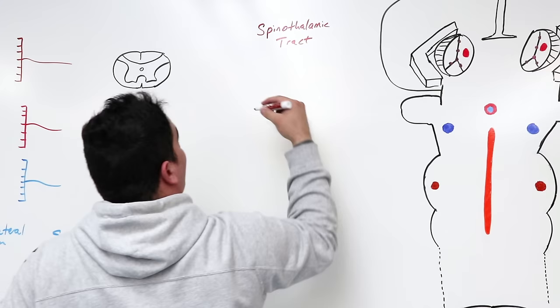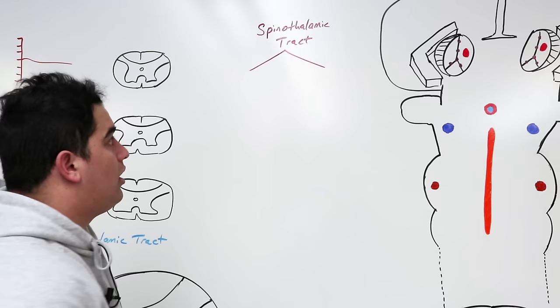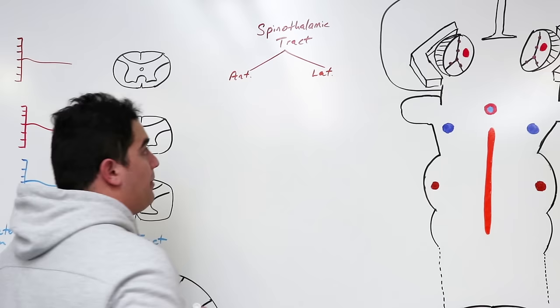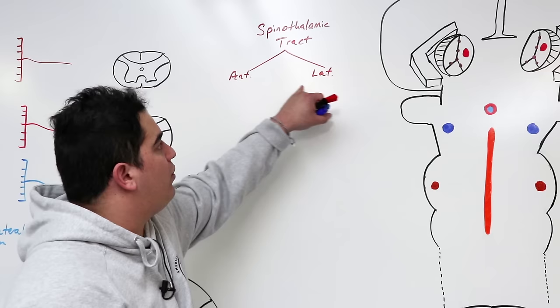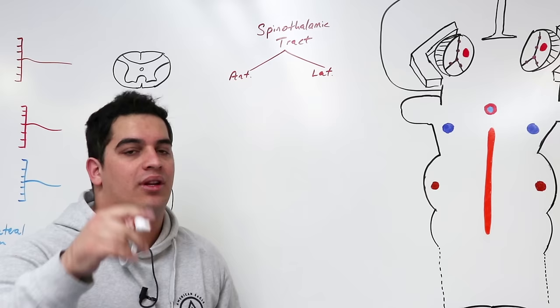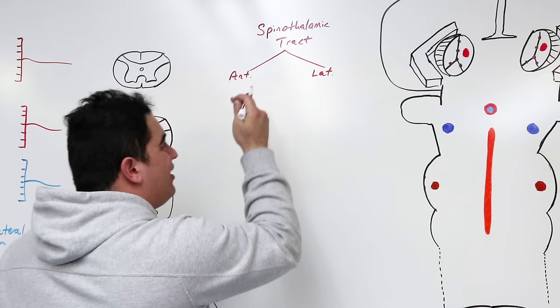You can call it the anterolateral system or the spinothalamic tract, but there are two divisions: the ventral or anterior, and the lateral spinothalamic tract. Earlier studies revealed that these two carried separate types of information — and we'll stick to that, but keep your minds open, because research is finding these two aren't as clear-cut as we thought.